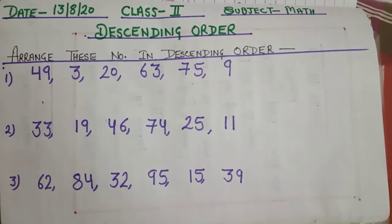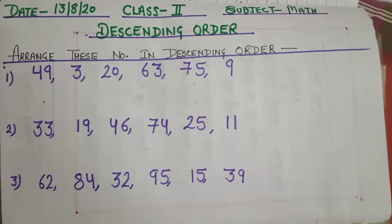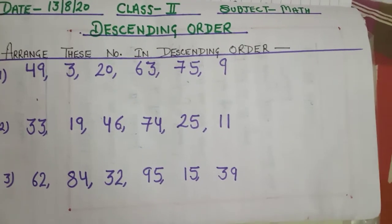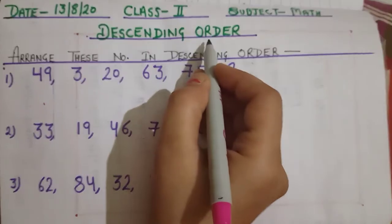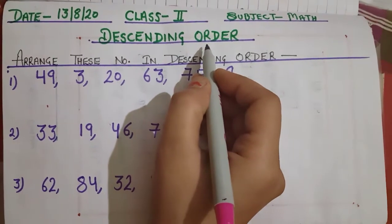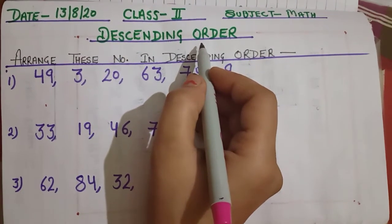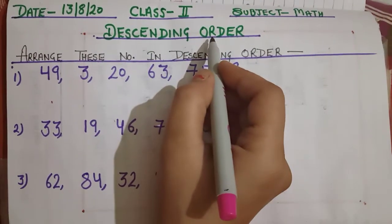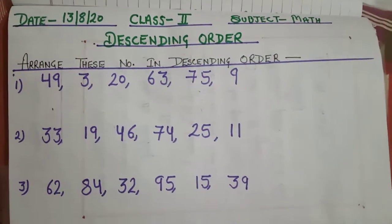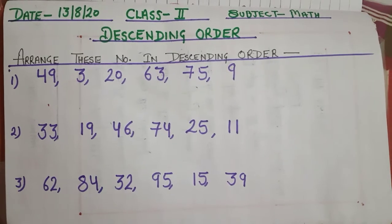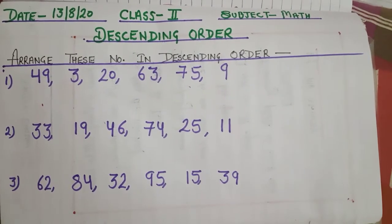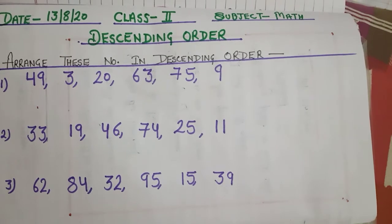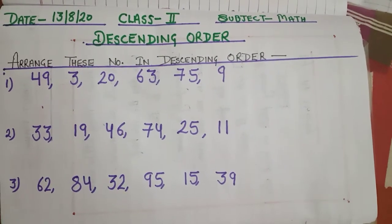Today in this class we are going to teach you descending order. First of all, I will tell you what descending order means. When we arrange numbers from the greatest to smallest, we call it descending order.